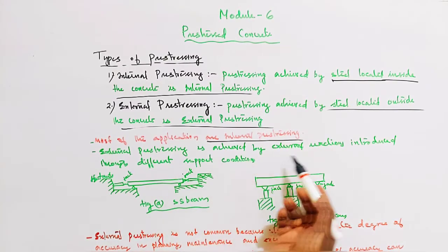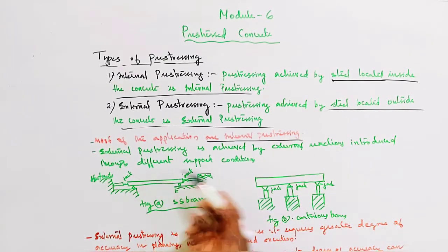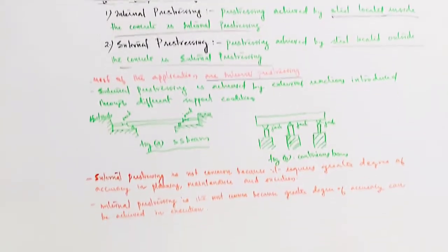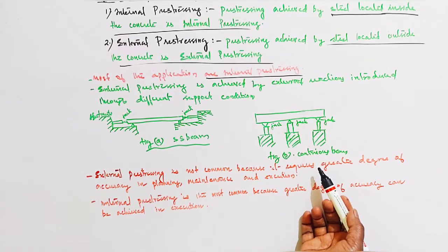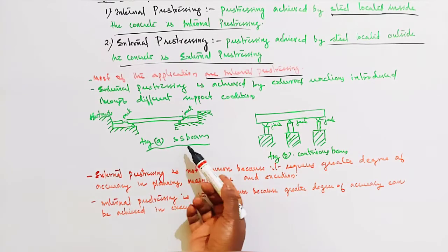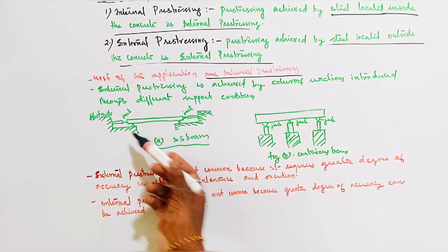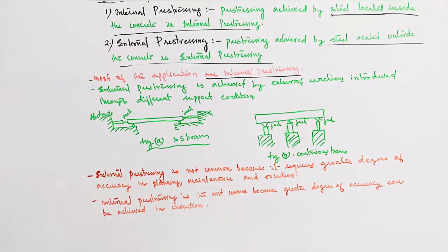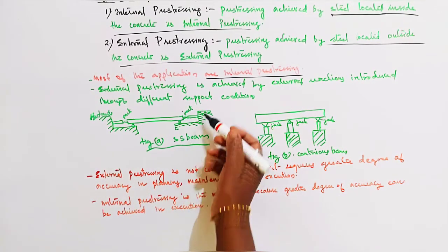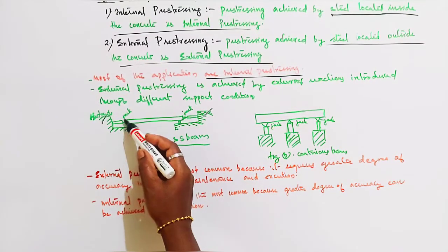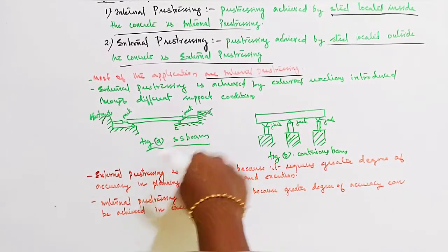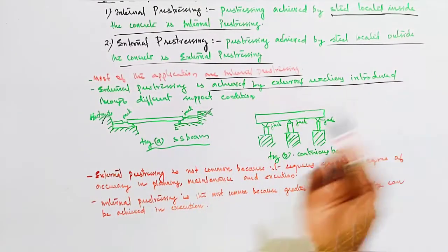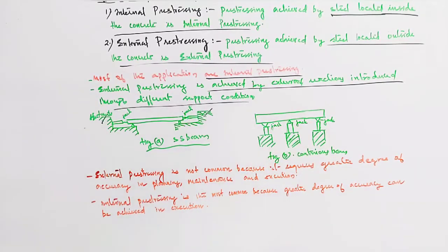External Pre-Stressing is achieved by external reactions introduced through different support conditions. This is a simply supported beam. This is a continuous beam. This is the support condition - externally pre-stressed by jacking against abutment. This is jacking against the abutment.